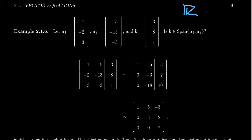Let's see. Set a1 as the first column. a2 as the second column. b as the augmented column. Your first pivot will be in the 1,1 position. So we'll take row 2 plus 2 times row 1.